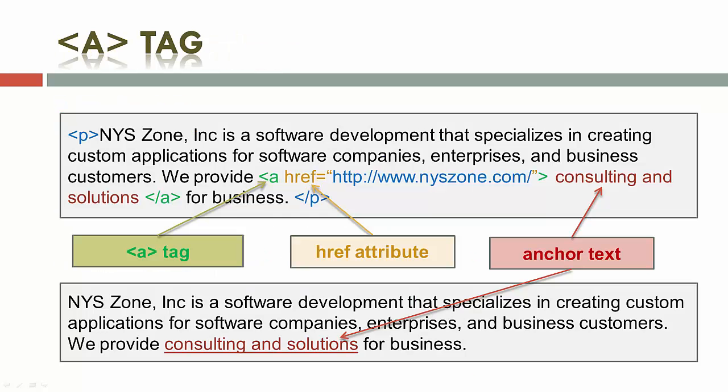On this slide you see an example of how the A tag can look on the web page and in its source code. In part 6 of this course we already talked about anchor text optimization.